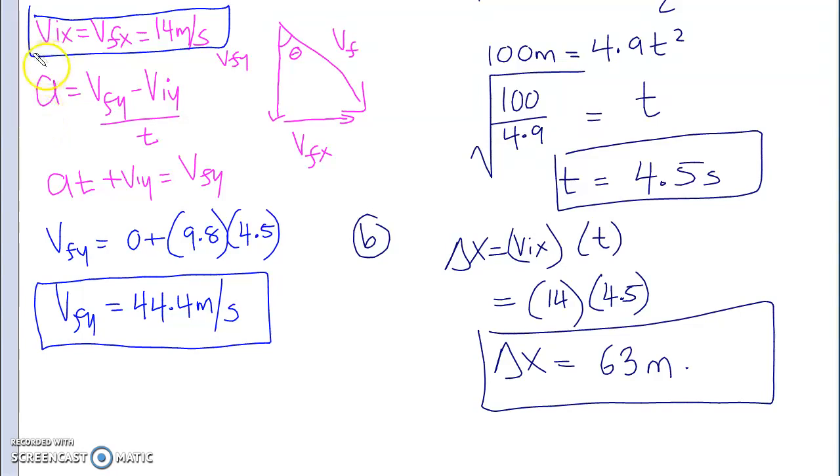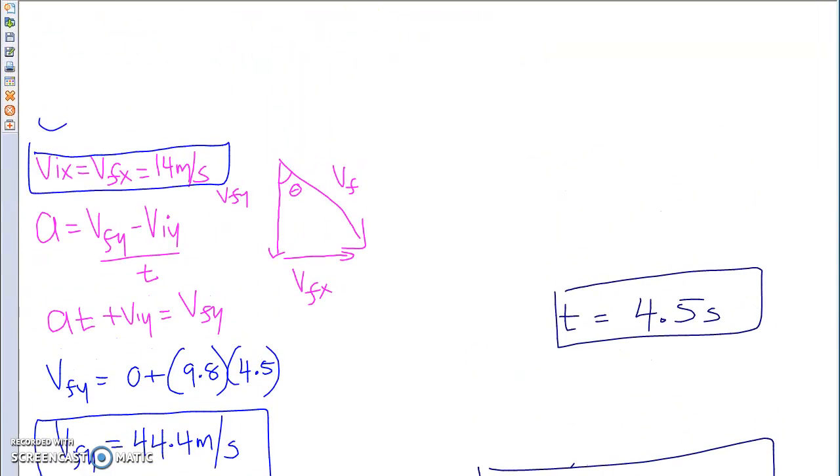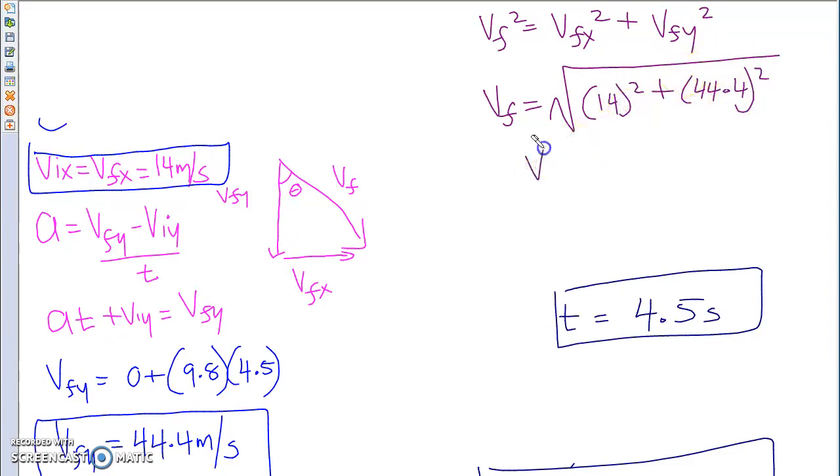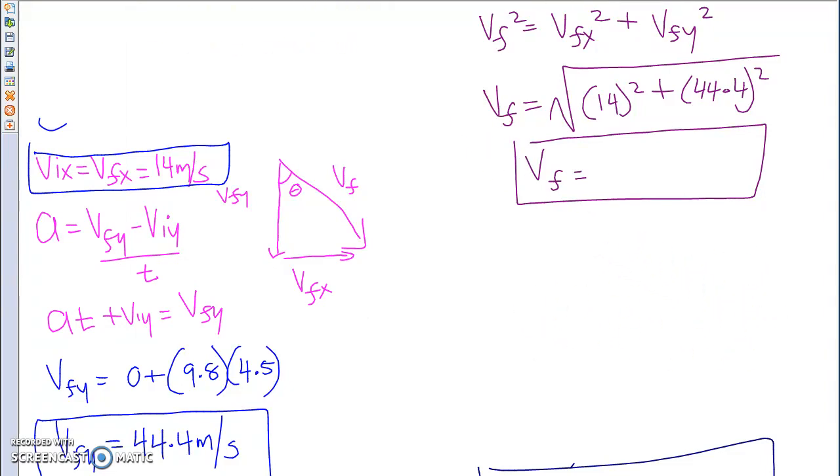And the next step now, after this, is to figure out what my final velocity is. And of course, because it's a right-angled triangle, we're going to be using Pythagorean theorem to solve for it. So my final velocity is going to be Vf squared equals Vfx squared plus Vfy squared. So Vf equals the square root of, I have the x squared, which is 14 squared, plus 44.4 squared. What do you get for your Vf? 46.5 meters per second.